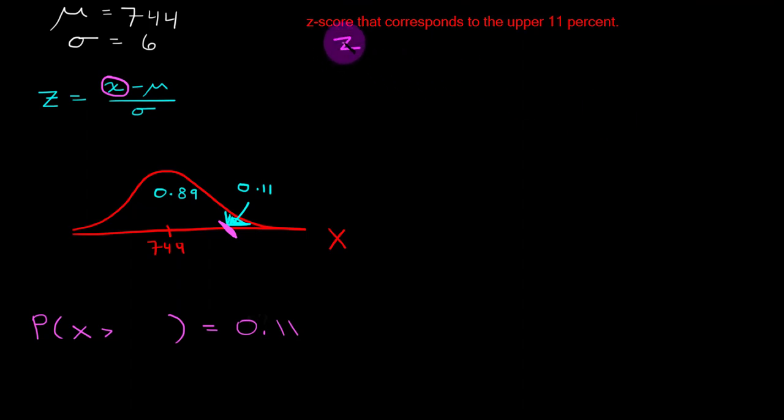Now that we have our z-score of 1.23, we can plug that z-score in along with mu and sigma and we'll be able to solve for x. So z equals x minus mu over sigma, plugging in the known z value, solving for x by plugging in our other known values.